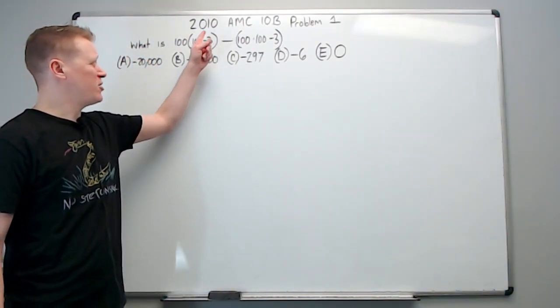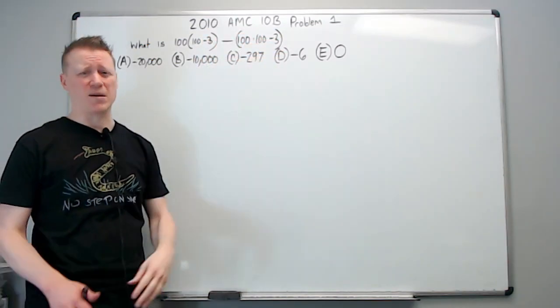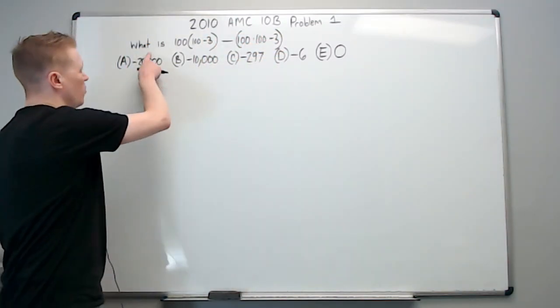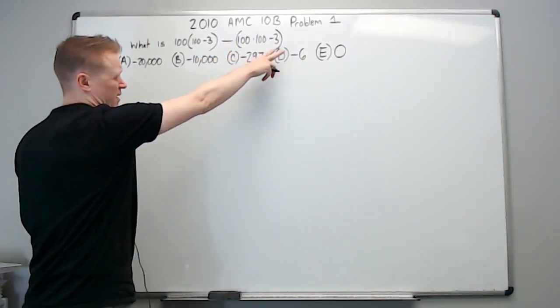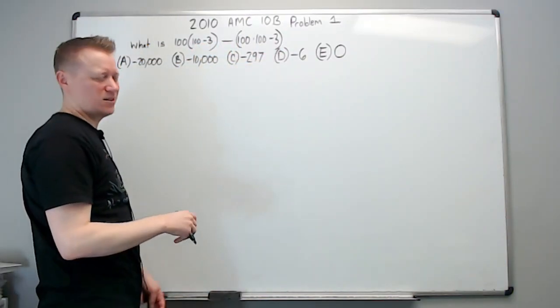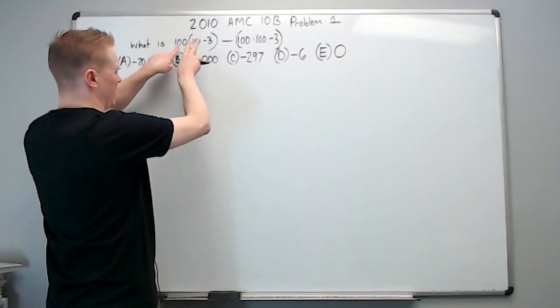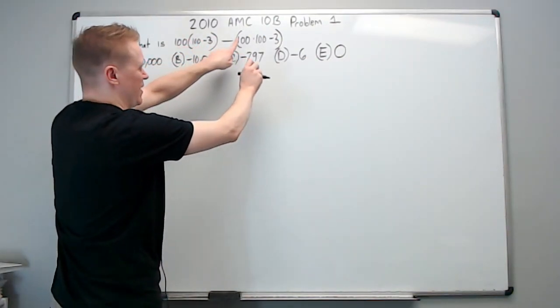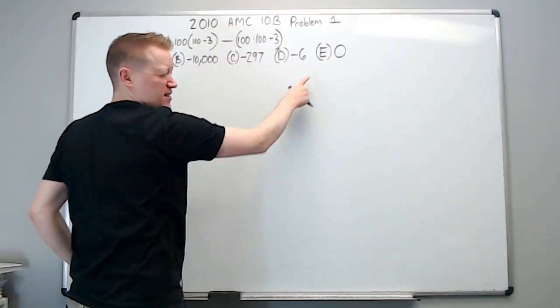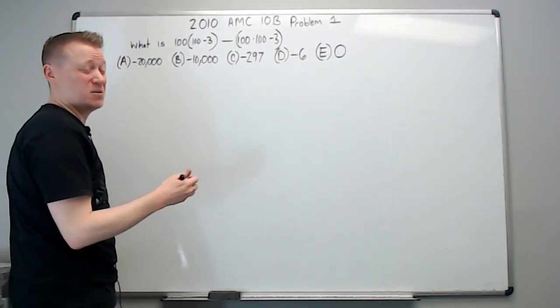Anyhow, getting to the 2010 AMC-10B Problem Number 1. What is 100 times this expression minus that? I mean, you're just calculating. Don't get too fancy. One mistake you could make is you might think 100 times (100 - 3) minus 100 times (100 - 3) is 0. As long as you're careful, you won't make that mistake.